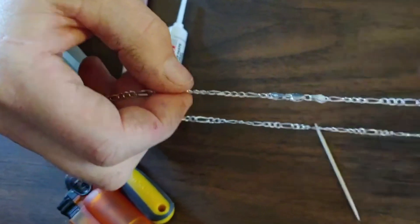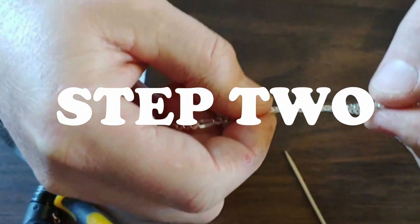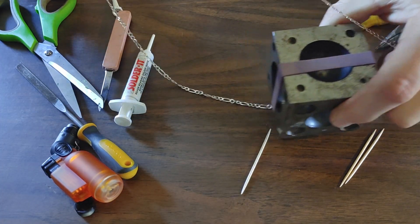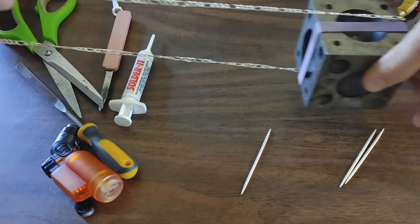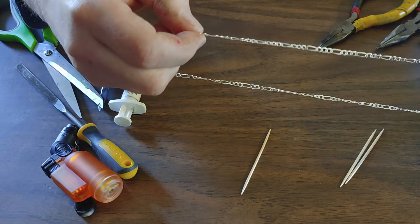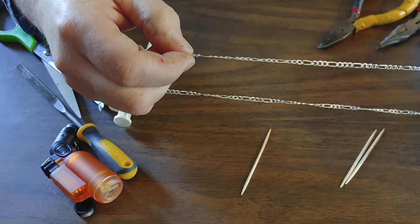Once your link is lined up and closed, it's time for step two. You're going to need a helper or a weight. Charles is using a doming block here. The weight puts a small amount of tension on the chain, which helps you make the repair.